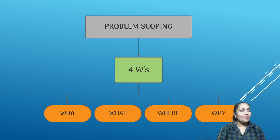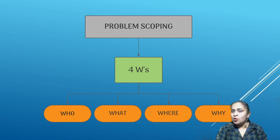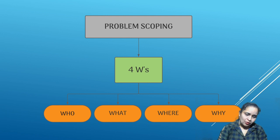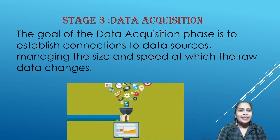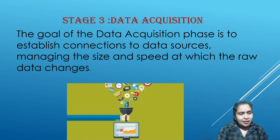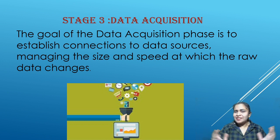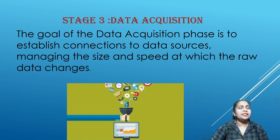The last W is 'Why' — why this problem needs to be solved, who will be benefited when we solve it, and what will be the benefit of solving this problem. If you are able to answer these four questions, then the problem scoping is successful.